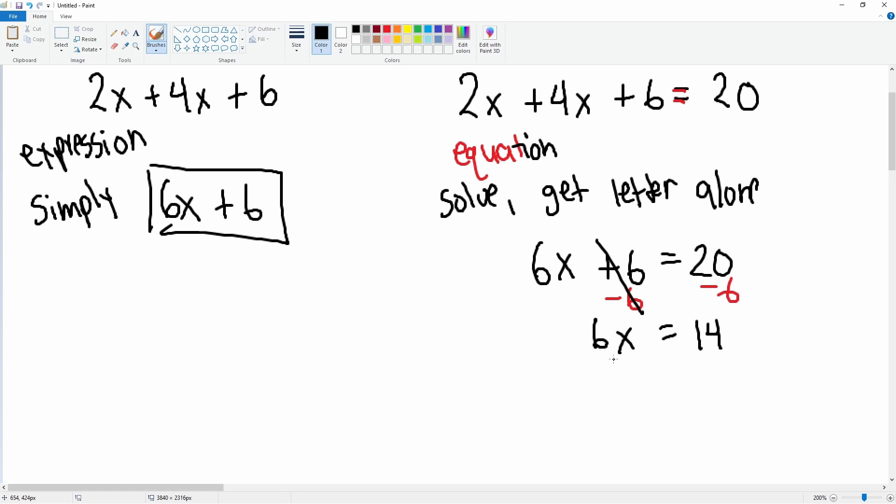6x is still not alone, so we divide by 6 to both sides. 6 over 6 is really the number 1, so this becomes 1x, but no one really writes that 1, so it's just x is equal to 14 divided by 6. You can simplify that into 7 over 3.